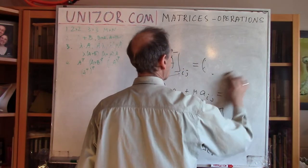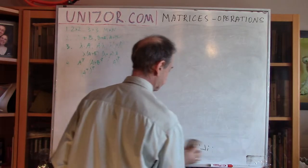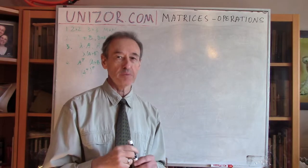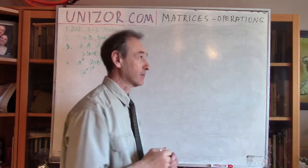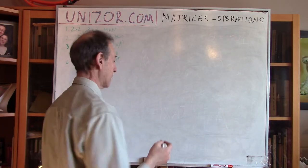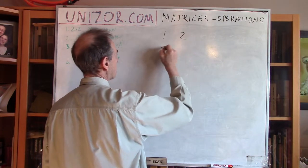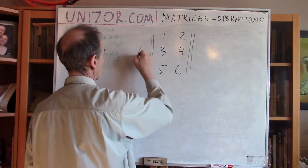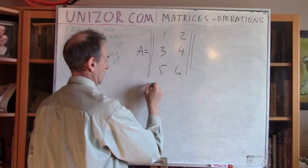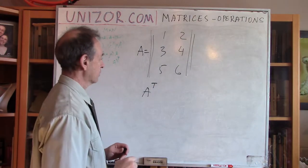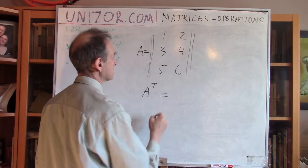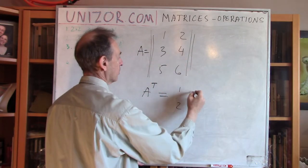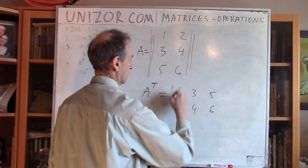The last operation on matrices is not exactly as trivial as the previous two, and it will play a more significant role when using matrices as transformations. It's called transposition of the matrix. Let me explain what it is on an example. If you have a matrix, transposition — written using the power notation with the letter T — means I will use every row as a column and every column as a row. So row [1, 2] becomes my first column, [3, 4] becomes my second column, and [5, 6] becomes my third column. That's what transposition means.